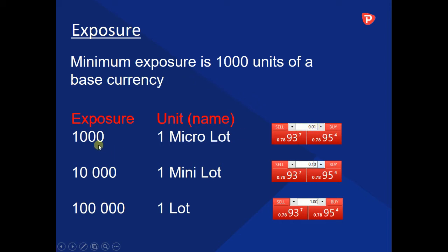You can go higher than that. 10,000 units is a mini lot, shown as 0.10 on the platform. Or a standard unit is 100,000, which is 1 lot, shown as 1.00 on your platform.